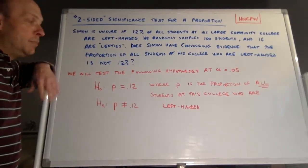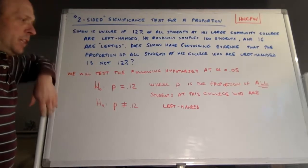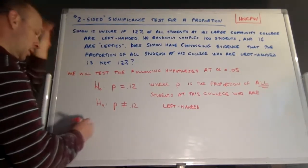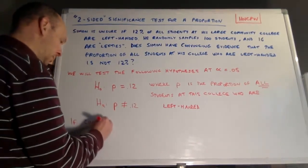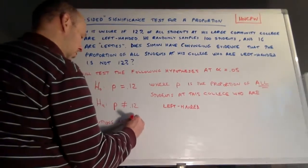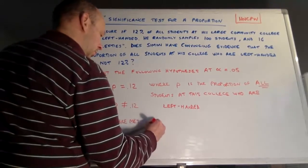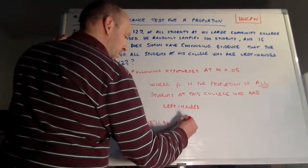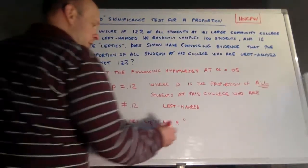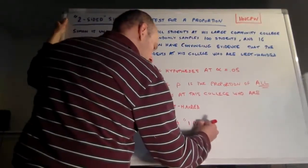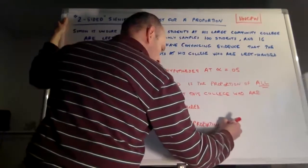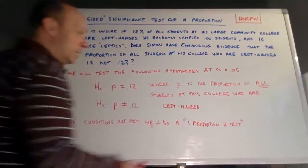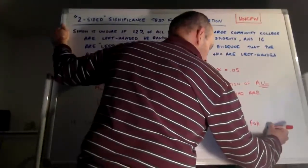The next step is to name the test, and we usually do that as part of setting up for the conditions we'll check after. So if conditions are met, we will do a one-proportion Z test. That's the same name as the test we did previously — it's just a two-sided version instead of a one-sided version. A one-proportion Z test for P, that population proportion.